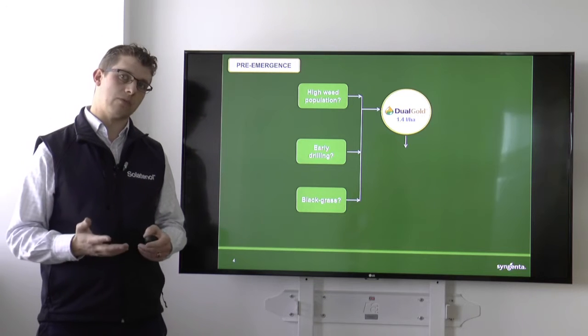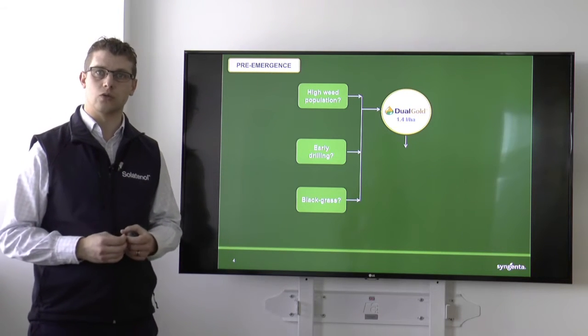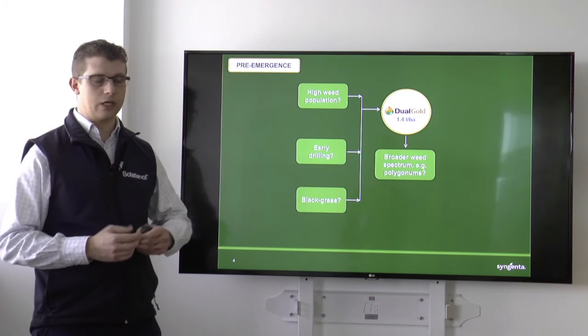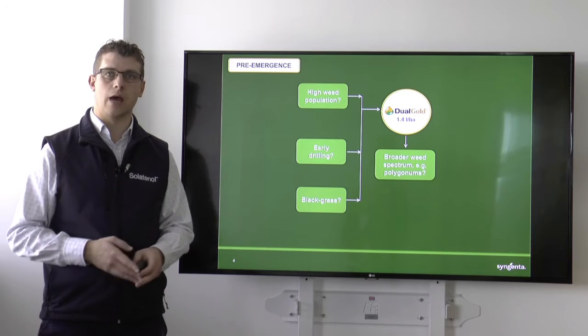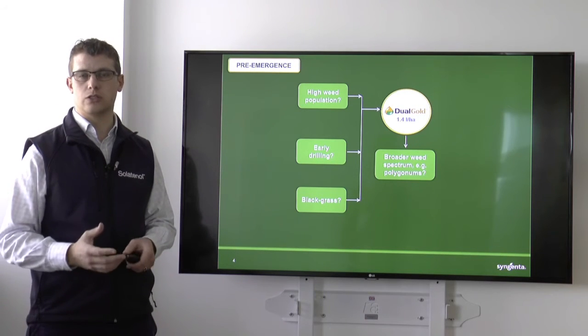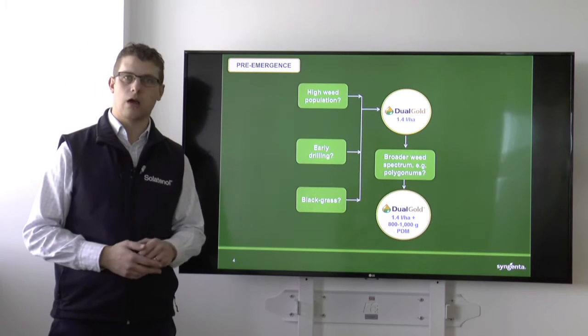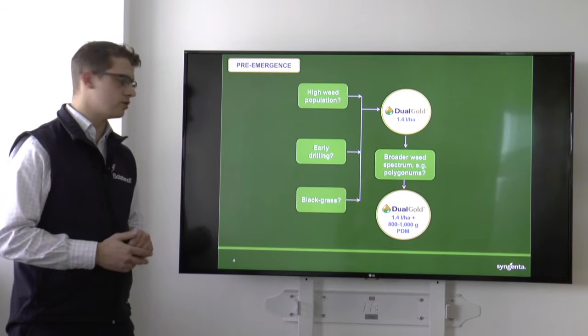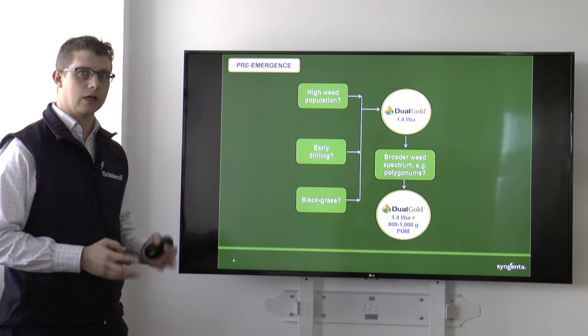It will also control some broadleaf weeds, but by no means is it a one-size-fits-all cure. So if we need to broaden out our spectrum, if we know we're going to get some polygonums, some fat hen, etc., and we want to take care of those in a pre-emergence situation, then we would look to add some pendimethalin. So 800 to 1,000 grams of pendimethalin a hectare should do the job quite nicely.